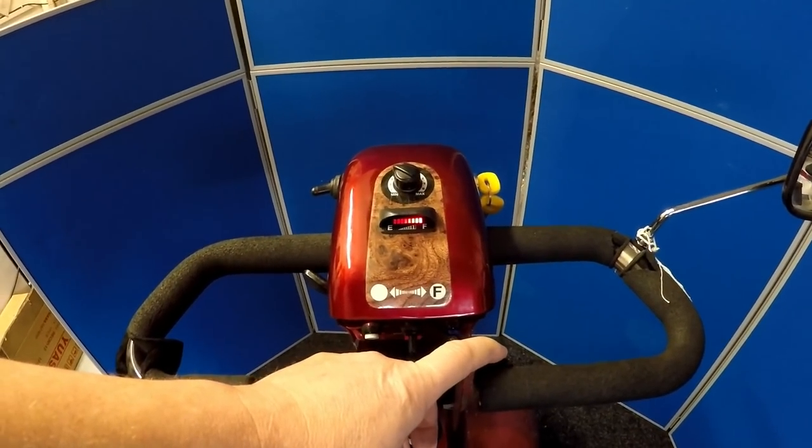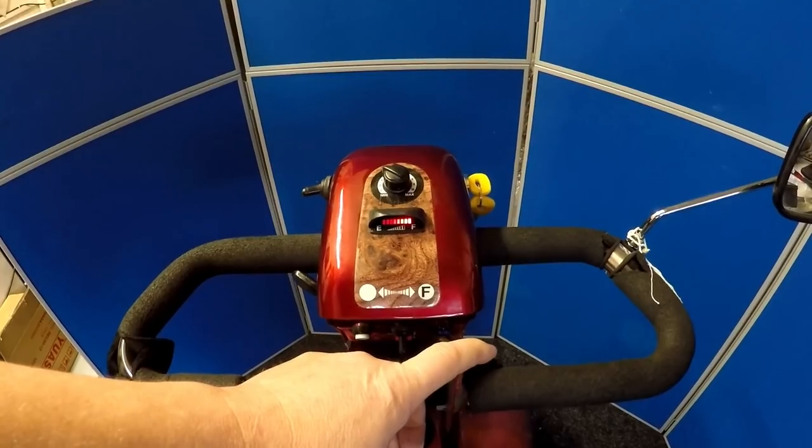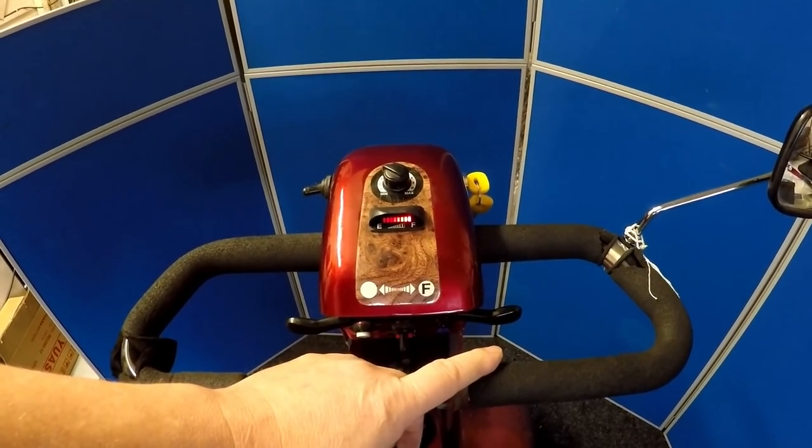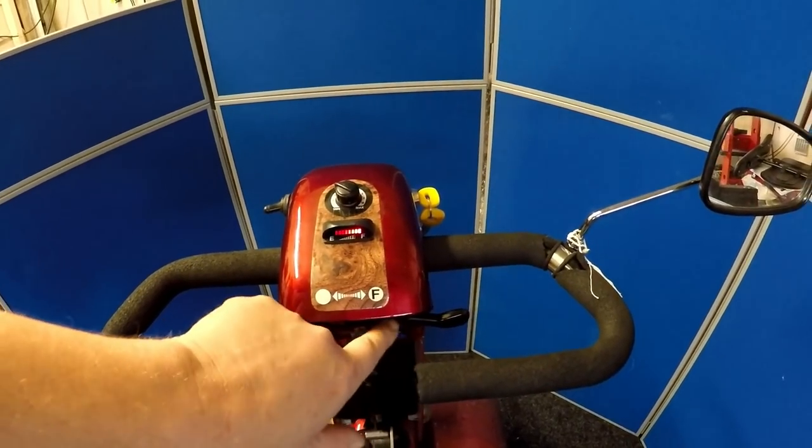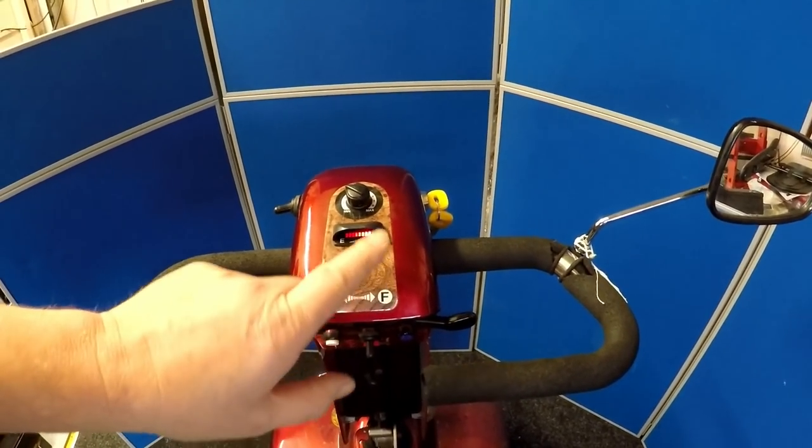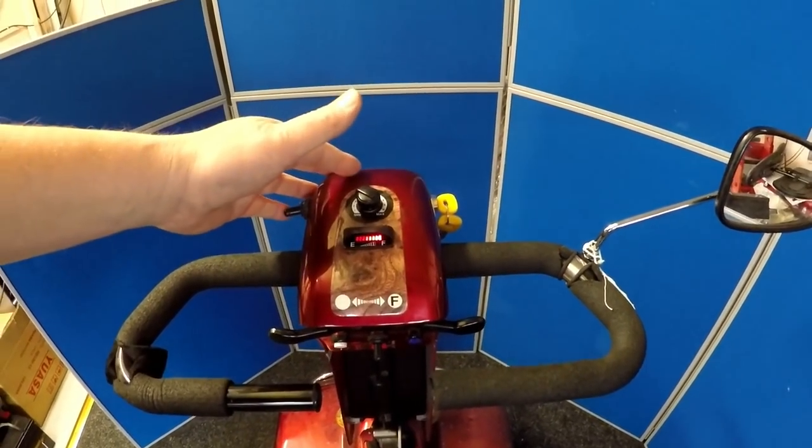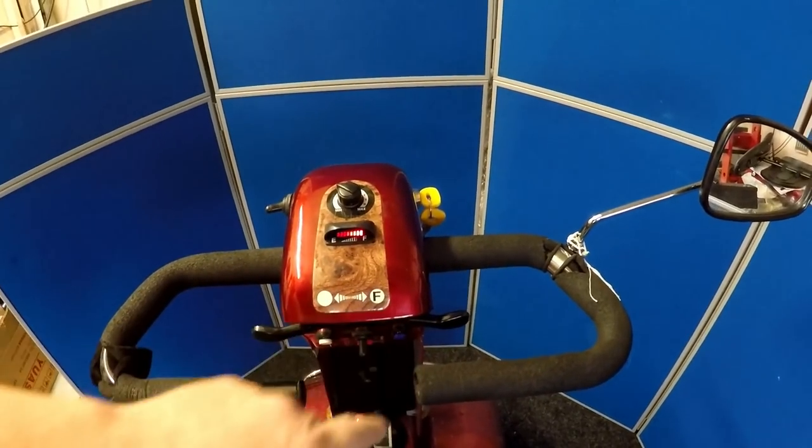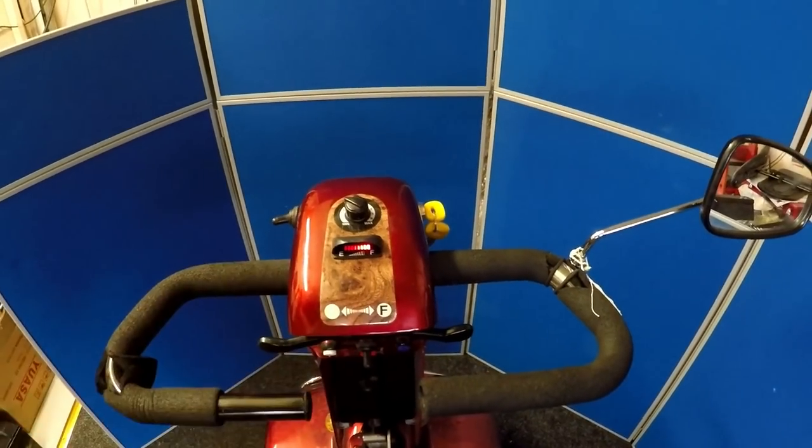There's no battery issue at all, so the problem lies with the throttle pod. The throttle pod is located on this particular lever underneath here. What I'm now going to do is remove the plastic shroud here and show you how this throttle pod looks and how it's fixed onto the frame.